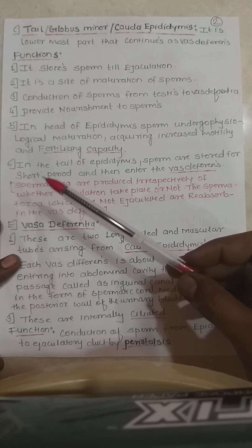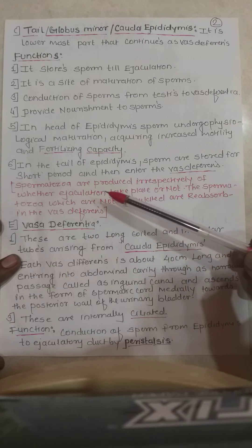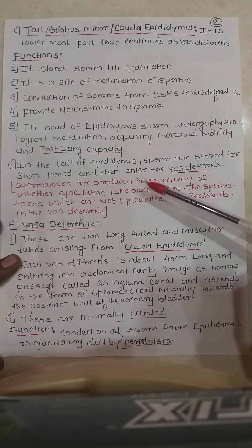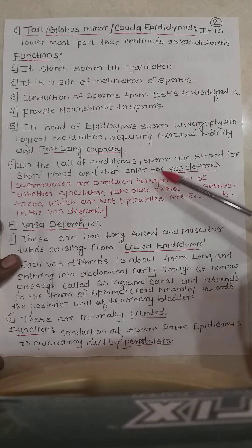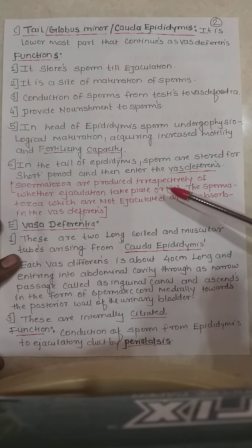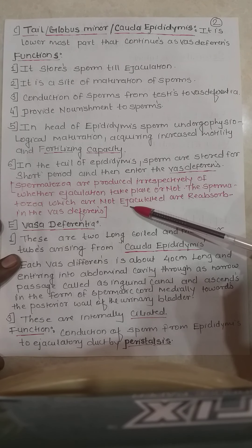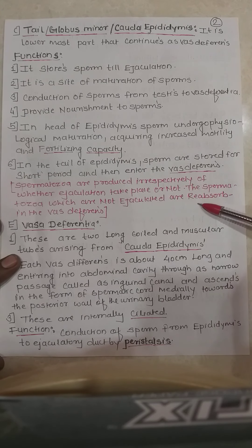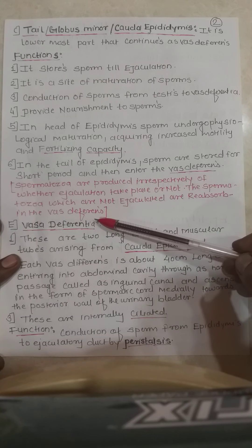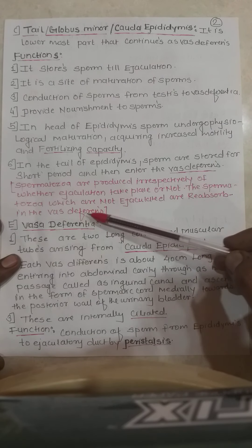Spermatozoans are produced irrespective of whether ejaculation takes place or not. Those sperms which are not ejaculated are reabsorbed in the vasa differentia.